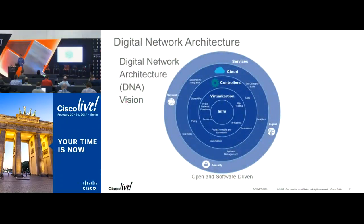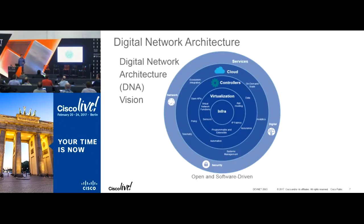To get you warmed up: APIC-EM is about DNA — it's a controller based in DNA. DNA works from the inside out. You've got network infrastructure that will be virtualized — virtualization lowers TCO, total cost of ownership. Controllers sit on top of that; APIC-EM, the Application Policy Infrastructure Controller, is one of those. Others include CMX and NSO, the Network Services Orchestrator. But we're going to focus on APIC-EM. Those controllers interface with cloud, which interfaces with services.